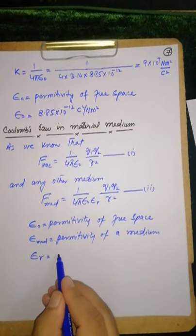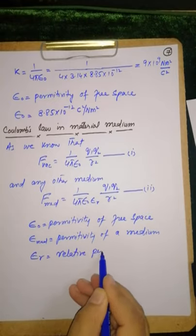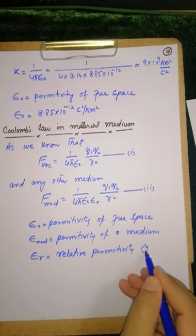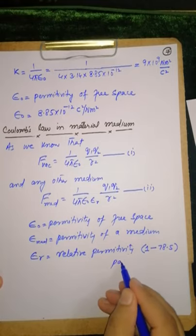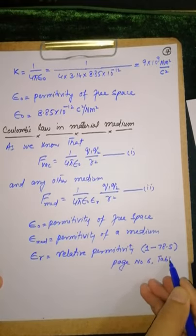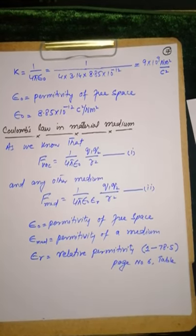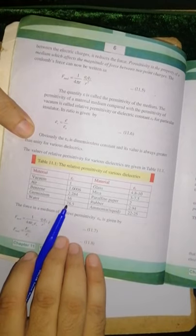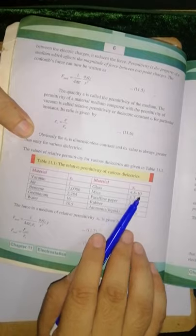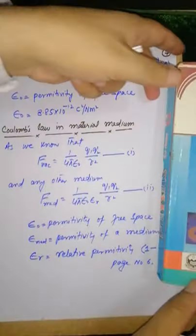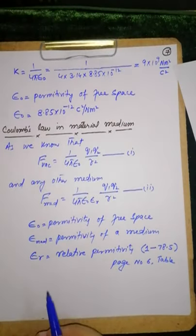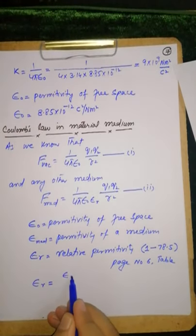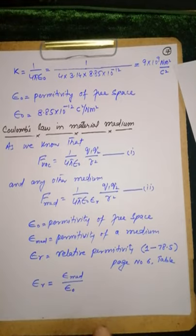Relative permittivity - for water the value starts at 78.5. You will find the table on page number 6 in the book. On page 6, the value for vacuum is 1, for water is 78.5, for mica is 6, for acetone is 7.5, for benzene is 2.9, for ammonia is 22, and so on.